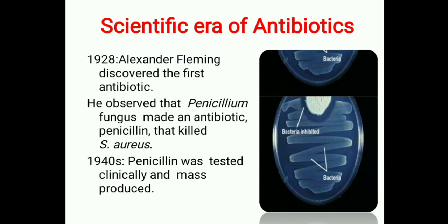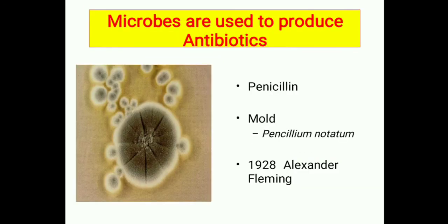Scientific Era of Antibiotics — Alexander Fleming discovered the first antibiotic. He observed that the penicillin fungus made an antibiotic, penicillin, that killed Staphylococcus aureus. In the 1940s, penicillin was tested clinically and mass-produced. Microbes are used to produce antibiotics such as penicillin, from the mold Penicillium notatum.